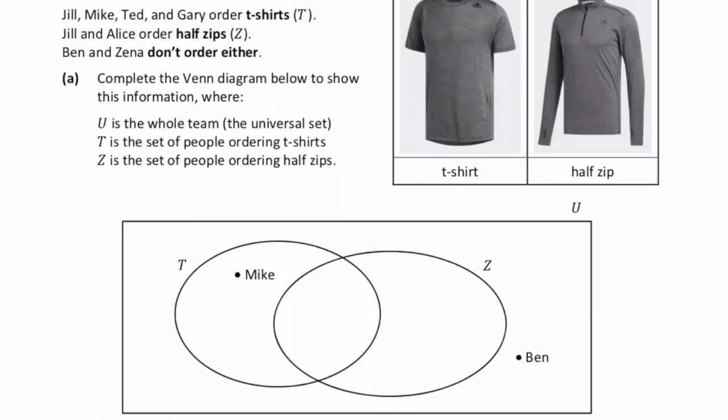Well it's useful first to find is there anybody who's ordered both a t-shirt and a half-zip. Jill is in both lists. So she's in the intersection here. So I'm going to put Jill in first here. Jill is in the list that goes in the middle of T and Z.